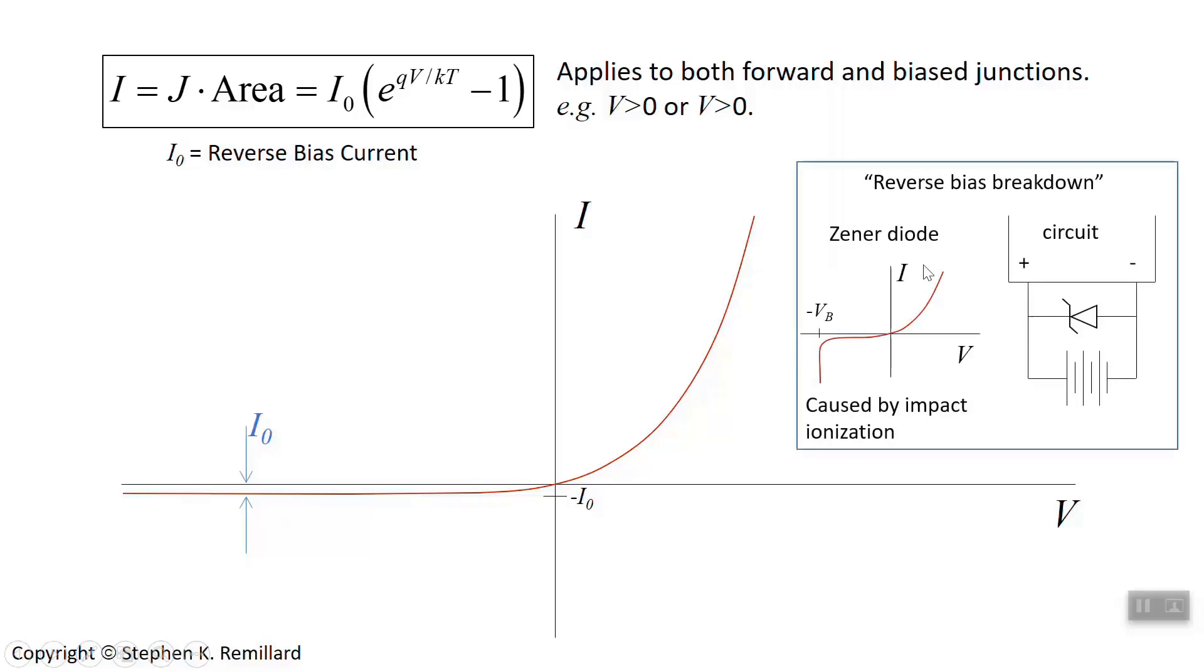And it kind of looks like this. So you have this same exponential on the positive side, but eventually it breaks down. So it's called reverse bias breakdown.